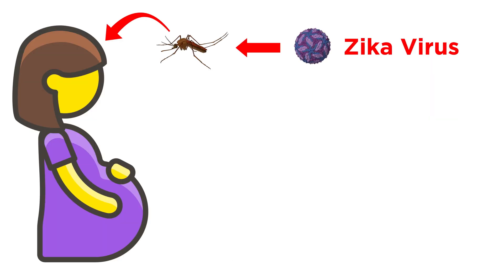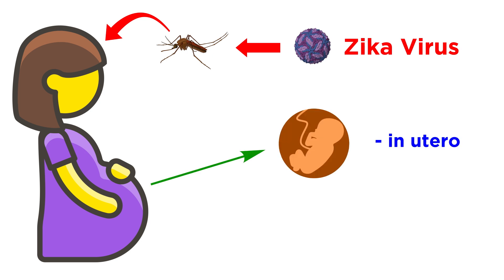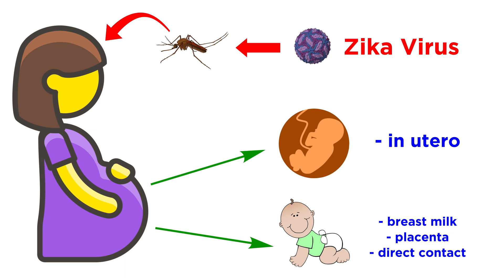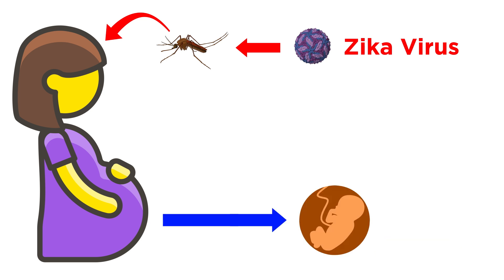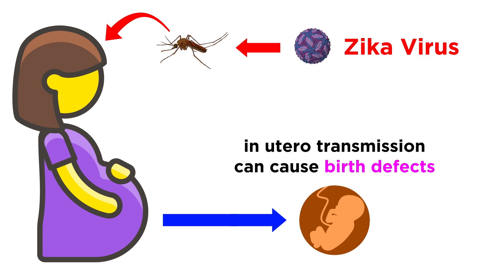But alarmingly, in infected pregnant women, Zika virus can pass from mother to baby in utero or after birth, either through breast milk, placenta, or direct contact during delivery. Even though infection in the mother is usually mild, the Zika outbreak in Brazil taught us that vertical in utero transmission of Zika virus can sometimes cause birth defects.